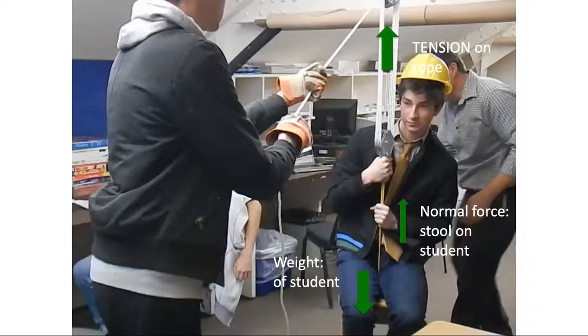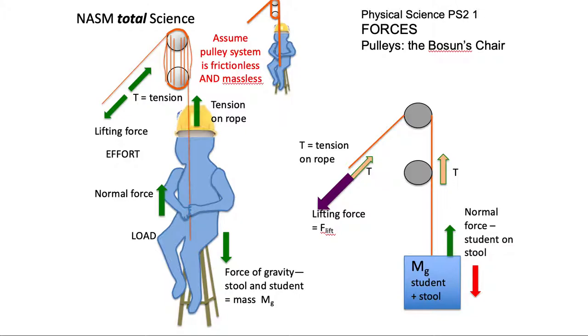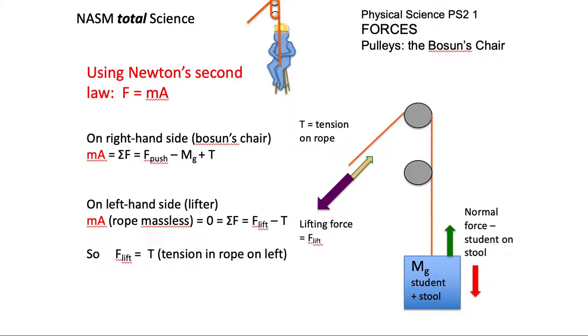So we've got the diagrams there, and other things that we have here on the diagram. You're going to assume it's frictionless and the pulley system itself is massless. It's just the mass of the student and the stool. And you can look more carefully at this using Newton's second law.